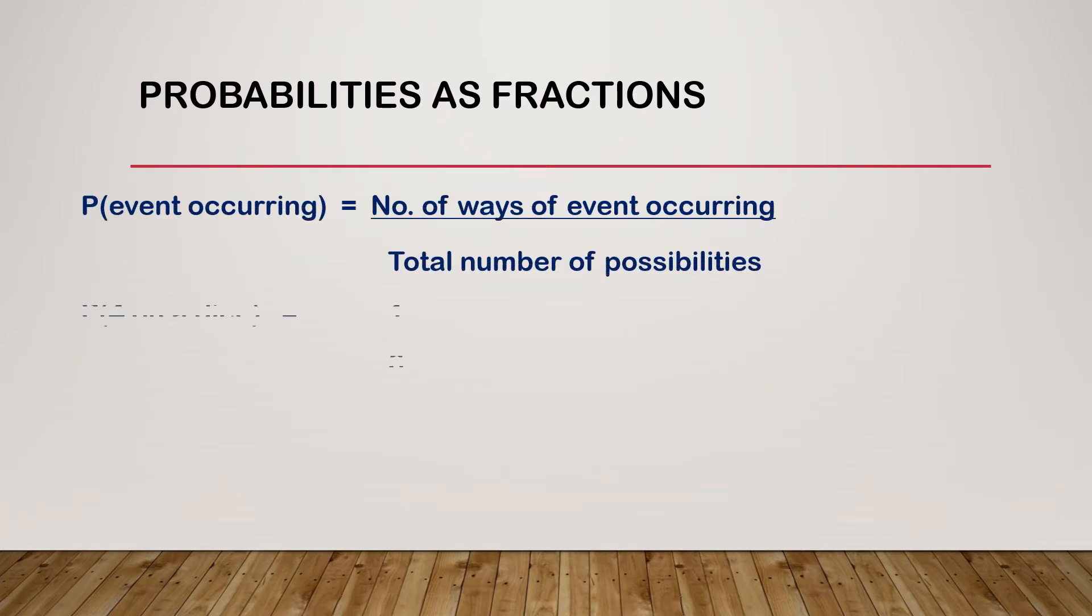When we're expressing probability as a fraction, it's the number of ways the event occurs over the total number of possibilities. So as we've just looked at, the probability of rolling a four on a dice is one over six. The probability of picking a card at random out of a pack of cards and getting a heart is 13 over 52, as there's 13 cards in a deck which has a heart on it, and there's 52 cards in total.